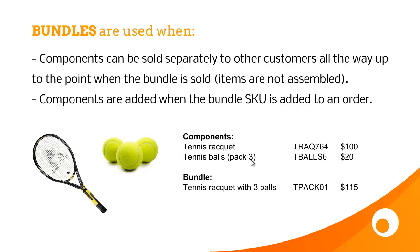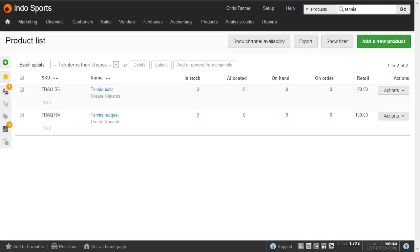We've actually chosen to price this bundle at $5 cheaper than the separate component parts, to give our customers a special offer — which highlights the need for a separate SKU at a separate price. Here we have the components in Brightpearl: the tennis balls at $20 and the racket at $100.